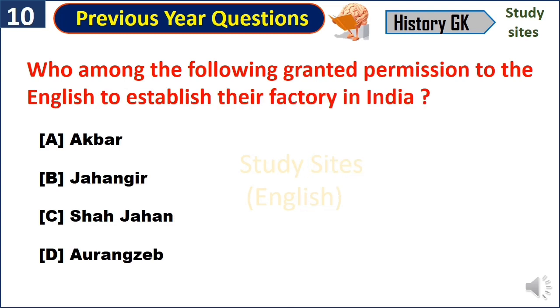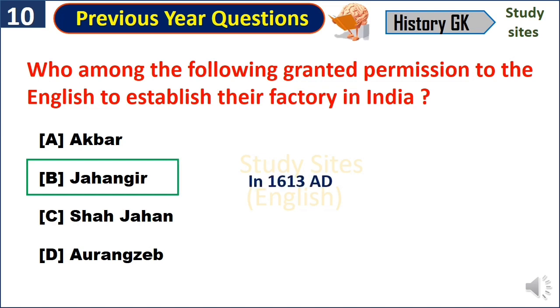Who among the following granted permission to the English to establish their factory in India? Jahangir, in 1613.